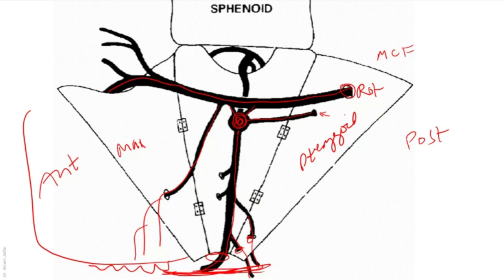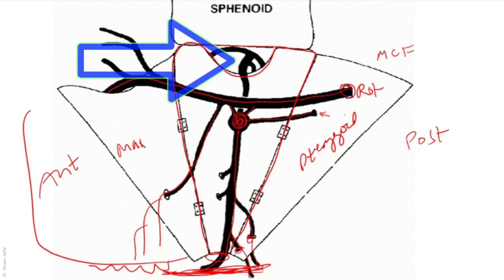Here is the horizontal plate of the palatine bone, and that will be the perpendicular plate of the palatine bone. You can see here, between it and the sphenoid bone, there is an opening which is the sphenopalatine foramen.